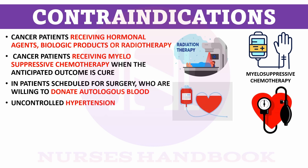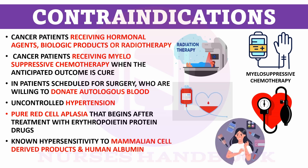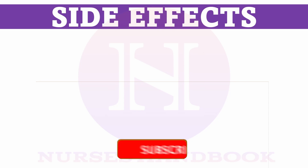4. A patient with uncontrolled hypertension. 5. If the patient develops pure red cell aplasia, especially after receiving any erythropoietin protein drugs. 6. When the patient is hypersensitive to mammalian cell-derived products and human albumin.